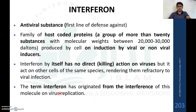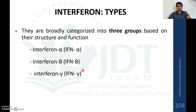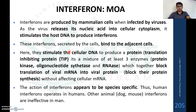The term interferon has originated from the interference of these molecules on viral replication. Interferons are broadly categorized into three groups: interferon alpha, interferon beta, and interferon gamma.